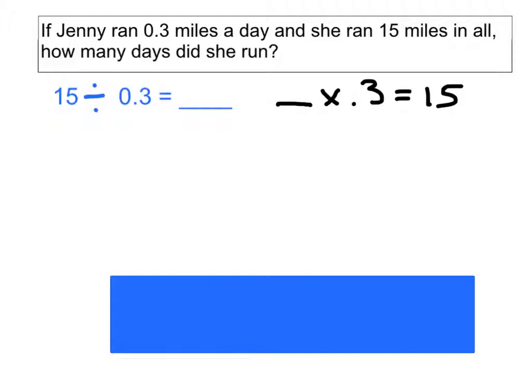Let's try to figure out how many days she ran. Now, what I'm going to do is I'm going to imagine or pretend that instead of running 0.3 miles a day, I'm going to imagine that she ran 3 whole miles a day. So that's an easier number for me to work with. If Jenny ran 3 miles a day, I know that 15 divided by 3 is 5. So I'm going to write that down here. This is a different problem, but it might help us. 15 divided by 3 is 5. So if she were to have run 3 miles a day, she would be running for only 5 days.